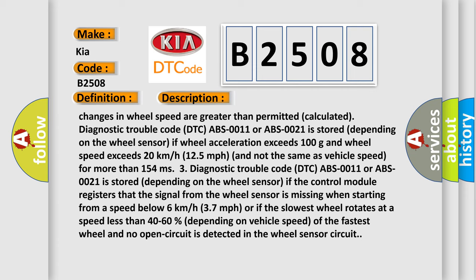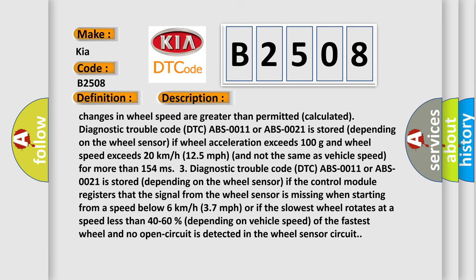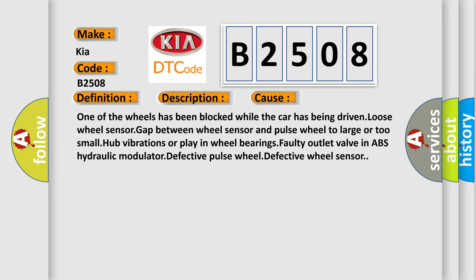This diagnostic error occurs most often in these cases: one of the wheels has been blocked while the car has being driven, loose wheel sensor gap between wheel sensor and pulse wheel too large or too small, hub vibrations or play in wheel bearings, faulty outlet valve in ABS hydraulic modulator, defective pulse wheel, or defective wheel sensor.